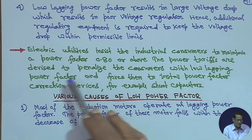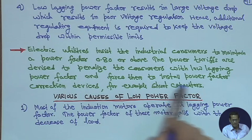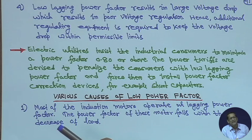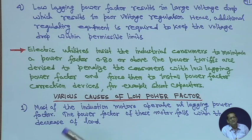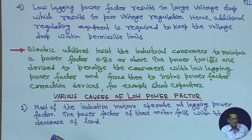Power tariffs are devised to penalize consumers with low lagging power factor and force them to install power factor correction devices, for example shunt capacitors. If your power factor is poor, you will draw more kVA from the utility and have to pay more money, because utilities charge on maximum kVA demand. Less kVA demand means better power factor.